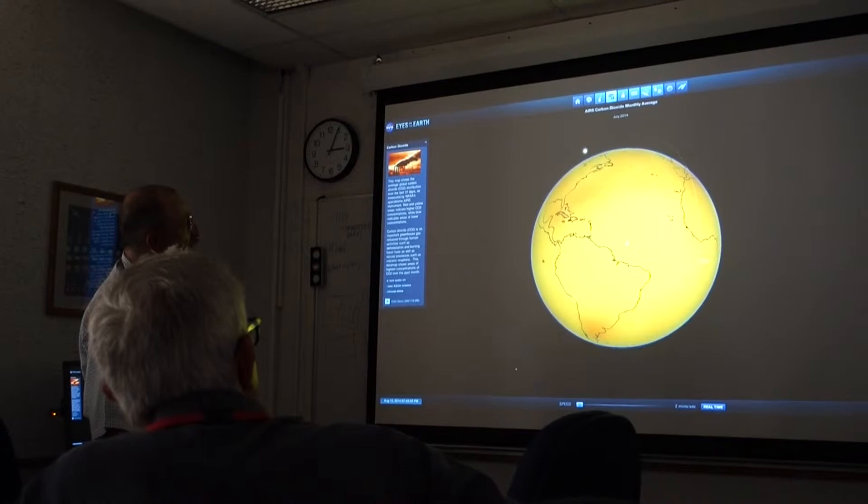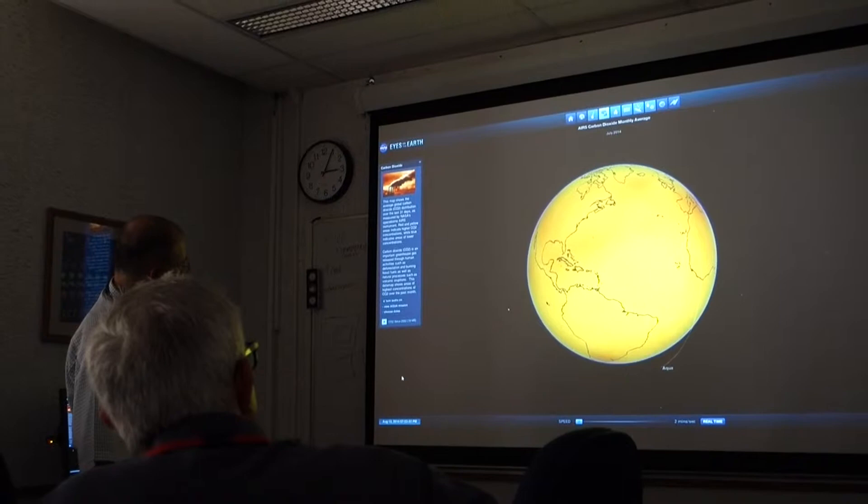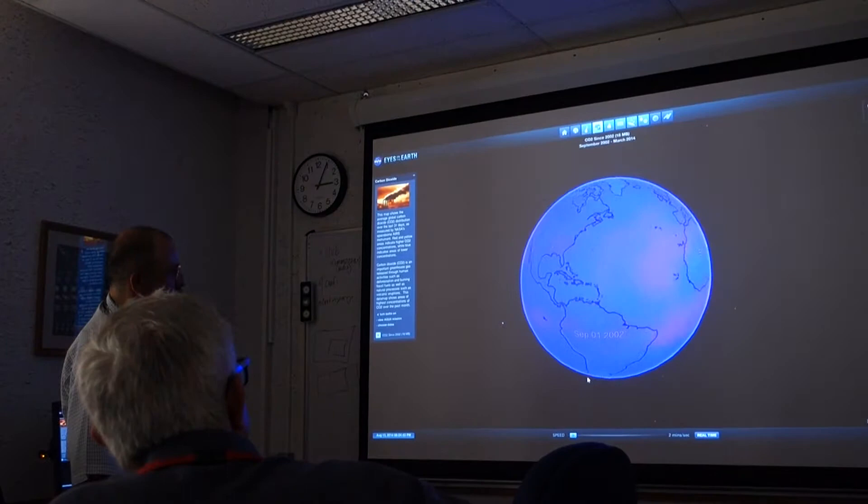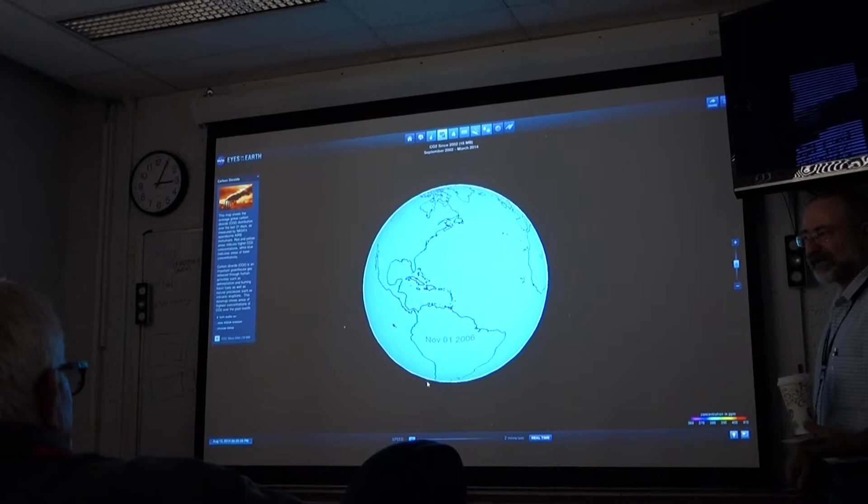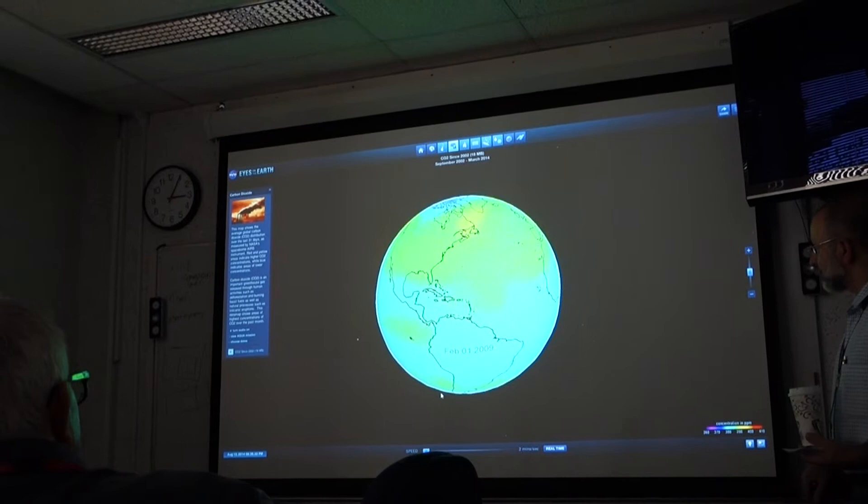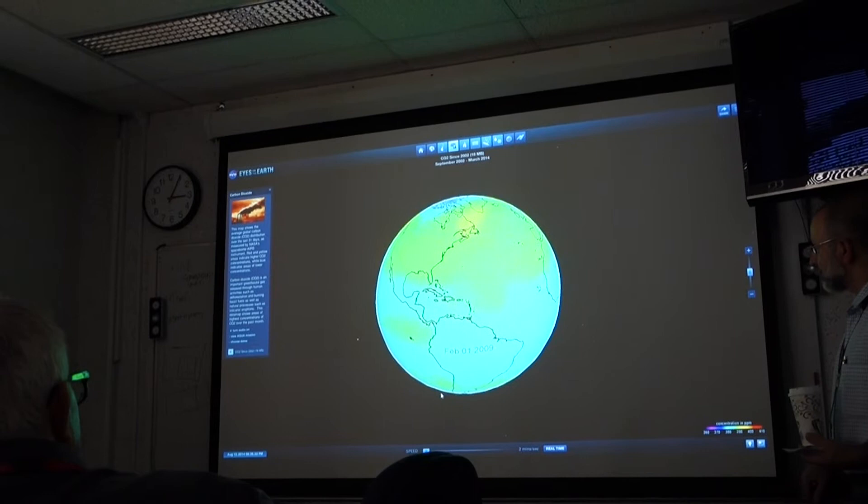We put in the entire 10, 12 years of carbon dioxide data set that's been collected from the AIRS instrument, atmospheric infrared sounder. Watch this. This is carbon dioxide since 2002. This is in the mid-troposphere. It's not down at ground. Now watch. Here starts here. Watch over time what happens to the globe, what color it turns. And this is real data. This is not us making cartoons. Wow. It's 2008. Listen to me. There's no climate change.